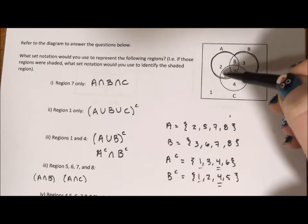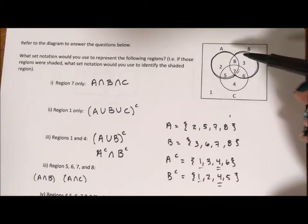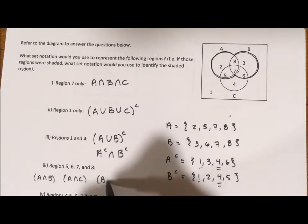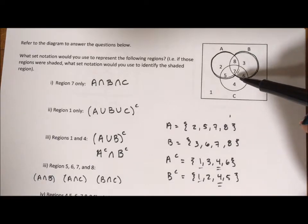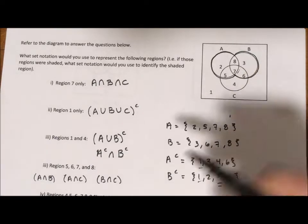I'm going to say the intersection of A and C. The intersection of A and C is going to be 5 and 7. I want to say the intersection of B and C. That's going to be 6 and 7.